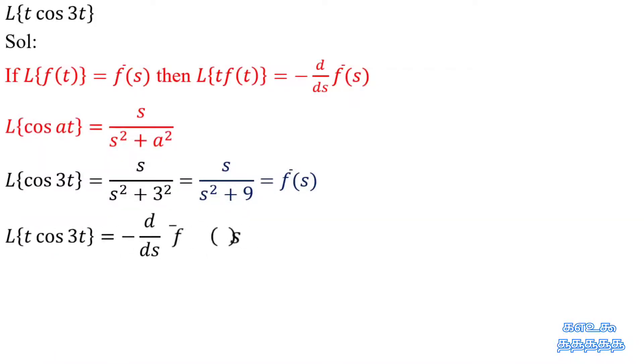Laplace transform of t cos 3t is equal to minus d by ds into f dash of s.